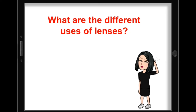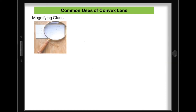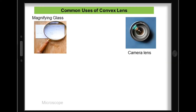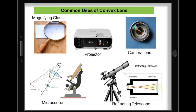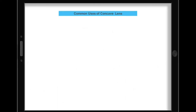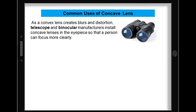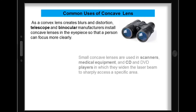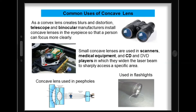What are the different uses of lenses? For the common uses of convex lens, it is used for magnifying glass, camera lens, microscope, refracting telescope, and even in projectors. For the common uses of concave lens, as a convex lens creates blurs and distortion, telescope and binocular manufacturers install concave lenses in the eyepiece so that a person can focus more clearly. Small concave lenses are used in scanners, medical equipment, and CD and DVD players in which they widen the laser beam to sharply access a specific area. Concave lenses are also used in peepholes and in flashlights.